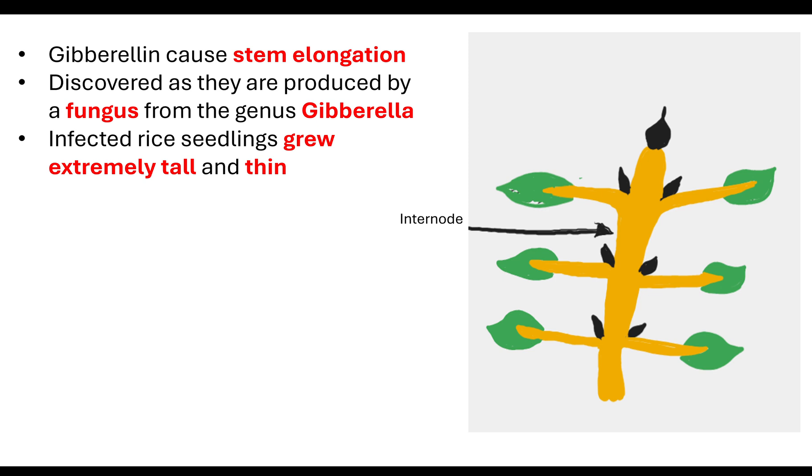When they took the hormone from the fungus and infected rice seedlings with it, the rice seedlings grew extremely tall and thin. That became a problem because if they grow too tall and thin, that pull of gravity will affect the plant's ability to compete for sunlight.